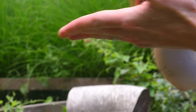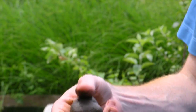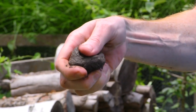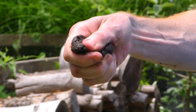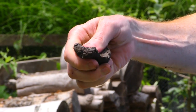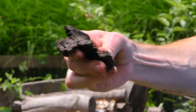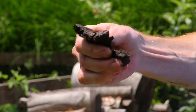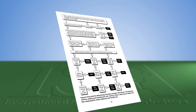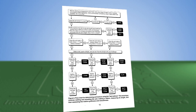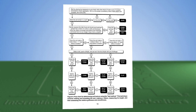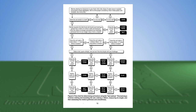If the soil remains in a ball, gently squeeze it into a ribbon of uniform thickness between your thumb and forefinger. If the sample does not form a ribbon but is very gritty, it is loamy sand. If it is not gritty, it is silt. If the soil does form a ribbon, use this flow chart from ISA's Soil Management for Urban Trees Best Management Practices to further assist in determining the type of soil in the sample.